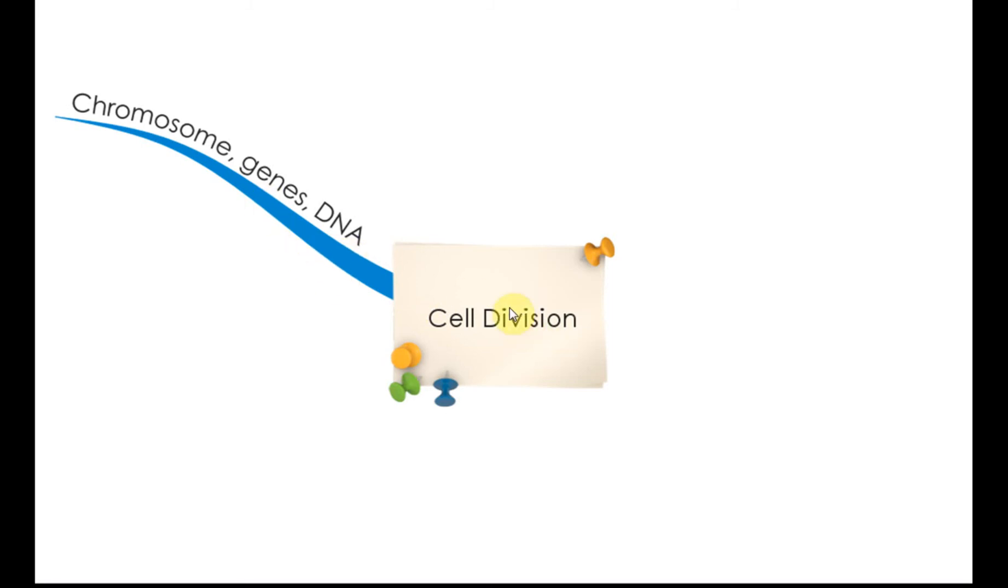After that, we are going to discuss the two types of cell divisions, mitosis and meiosis. For mitosis, we will discuss the process, how it occurs, and the importance of mitosis. And for meiosis, it's the same. We will discuss the process and the importance.